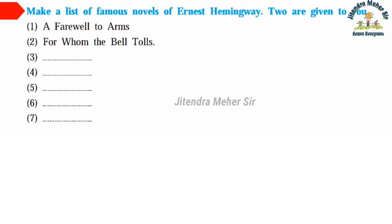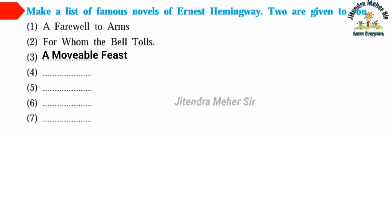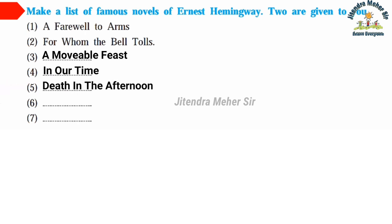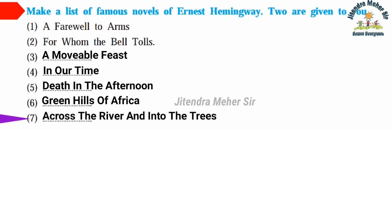Second activity: Make a list of famous novels of Ernest Hemingway — two are given to you. First: A Farewell to Arms. Second: For Whom the Bell Tolls. Third: A Moveable Feast. Fourth: In Our Time. Fifth: Death in the Afternoon. Sixth: Green Hills of Africa. Seventh: Across the River and into the Trees.